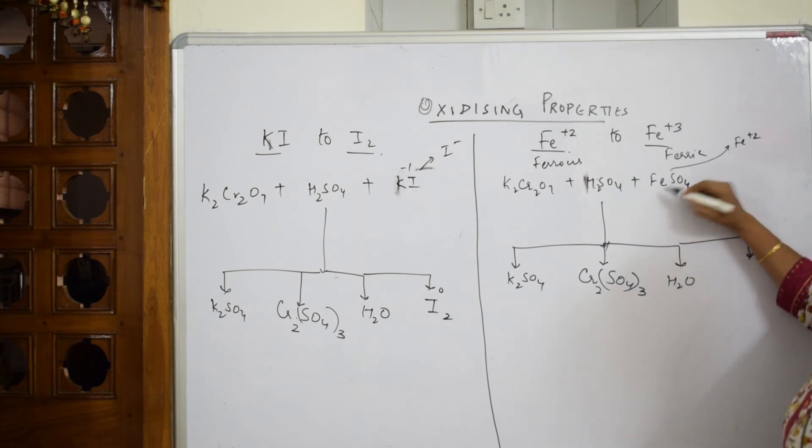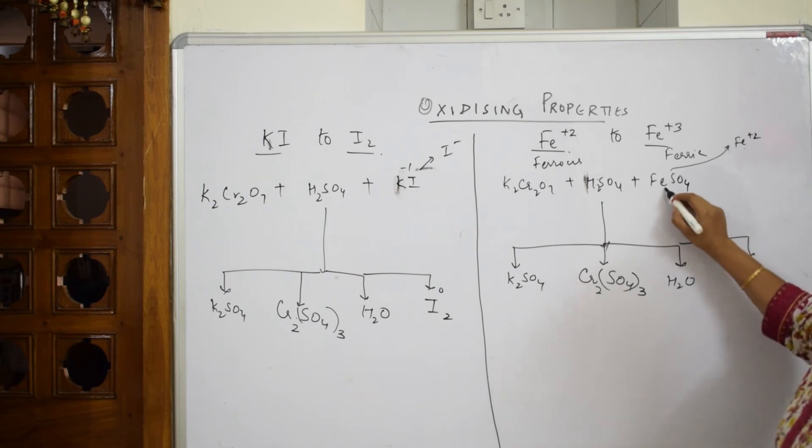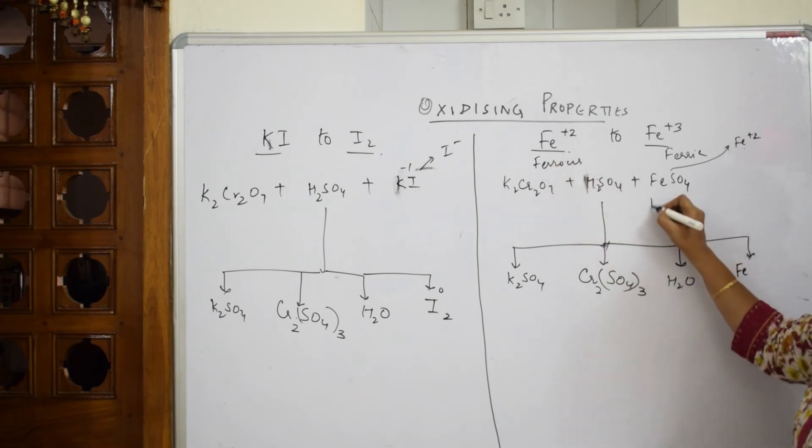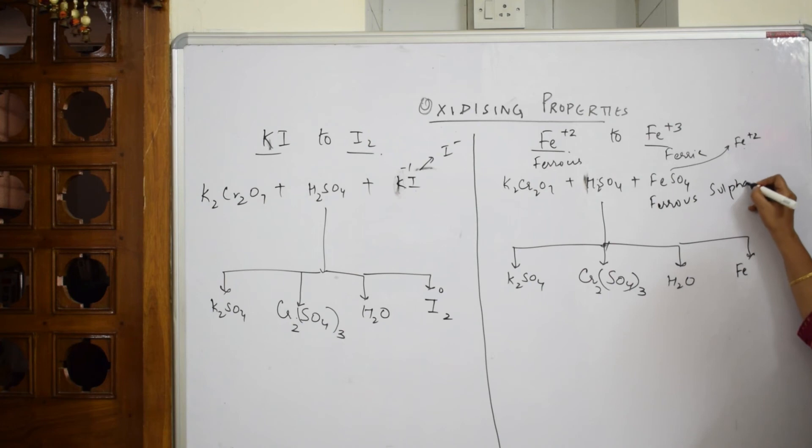Here FeSO4 plus two, so it's going to get converted or oxidized to higher oxidation state, that is ferric. Now this is ferrous sulfate, right? So ferrous sulfate will become ferric sulfate. How to write ferric sulfate? Ferric valency, the charge is plus three now, right?